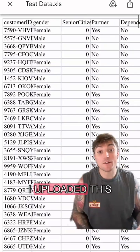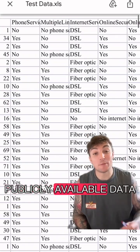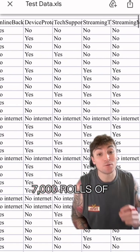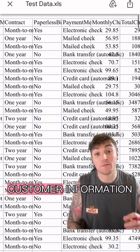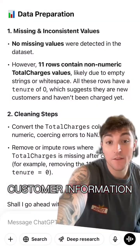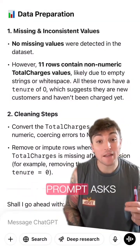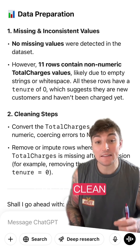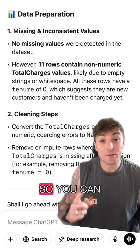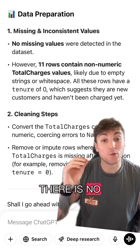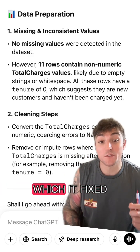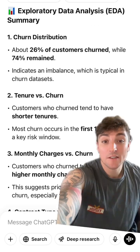I uploaded this publicly available dataset that has over 7,000 rows of customer information. The first thing the prompt asks is for ChatGPT to clean the data — you can see here that there were no missing values, but there were some inconsistent formats which it's fixed.